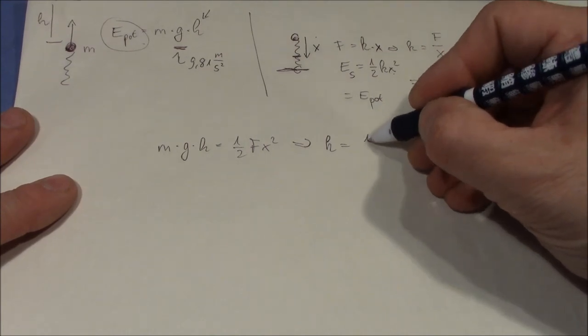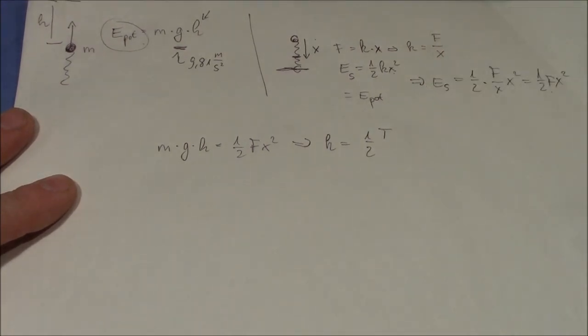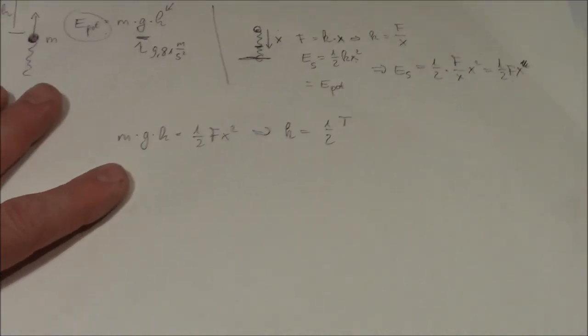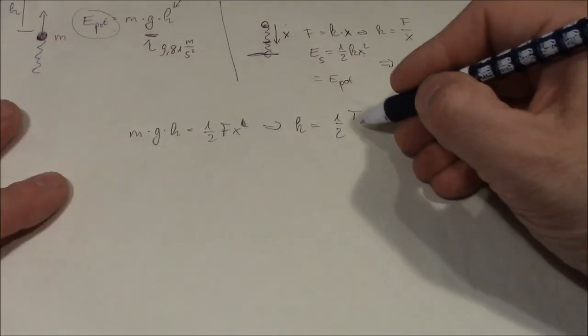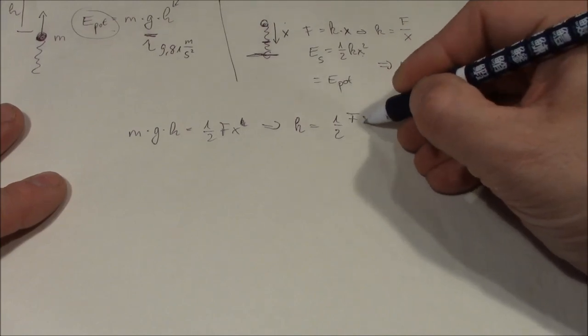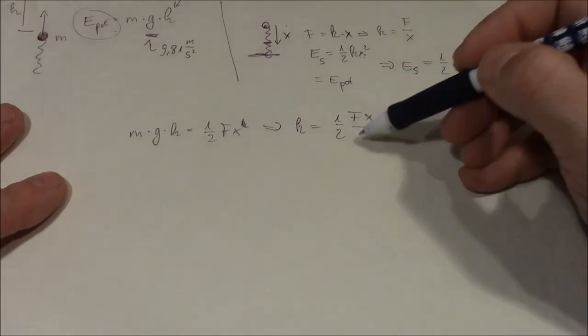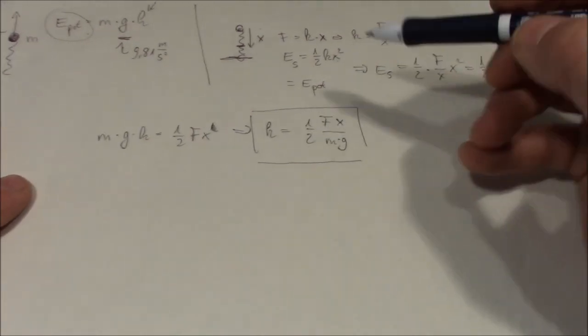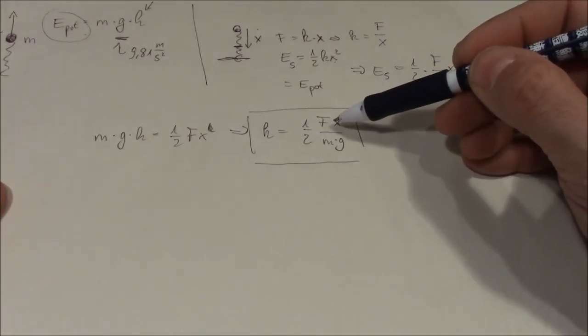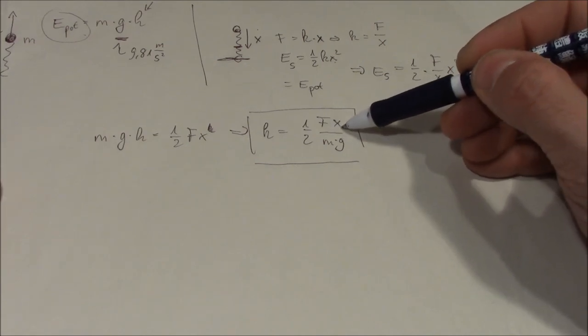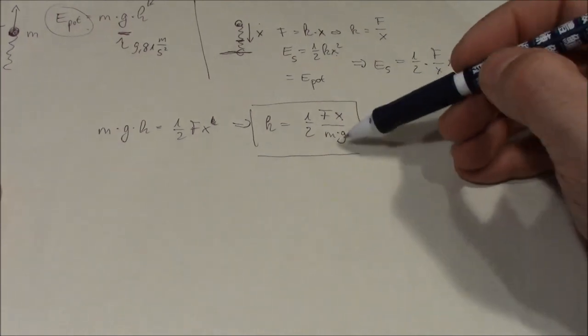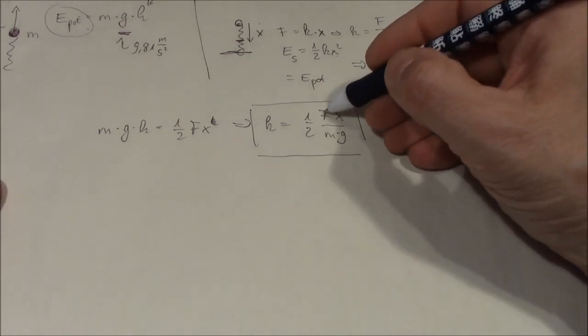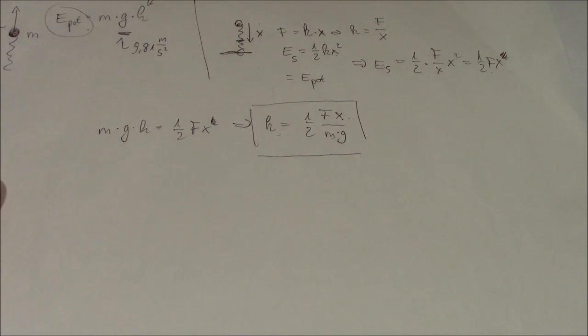Then we can calculate h, which is one half F x divided by m g. So the height of the bolt should be equal to the force, the maximum force of the spring compression, times the distance that we compress the spring, divided by the mass of the bolt and divided by the gravitational acceleration. Let's measure F, x, and m and do some math.